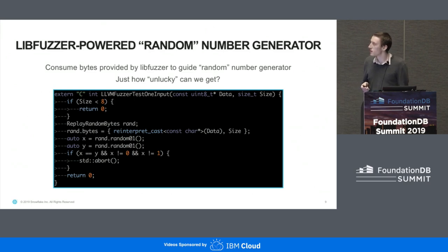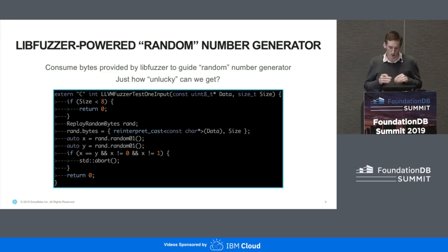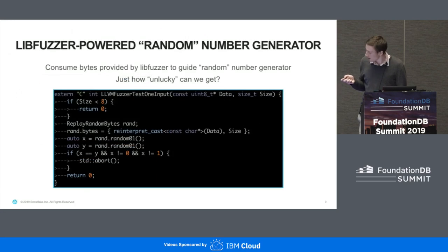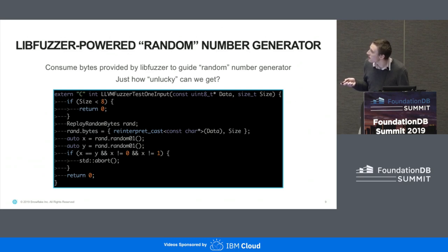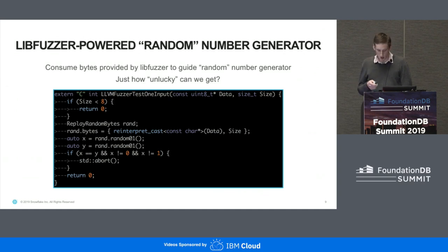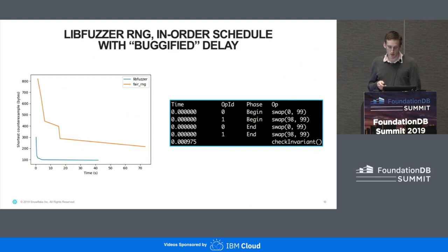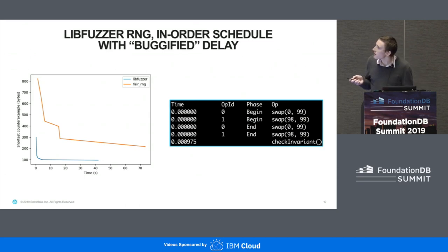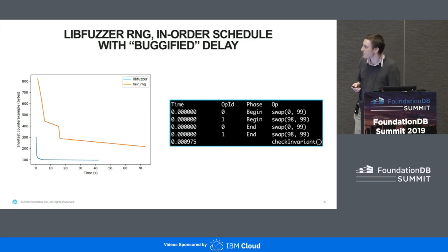The idea here is that instead of a fair random number generator, we just have the input to the program be the sequence of random numbers we're going to use. This ReplayRandomBytes class implements the random interface, and basically you can request two random numbers and crash if they're the same — and with libfuzzer it will actually find that input, whereas the random number generator won't. Comparing the quality: the fair random number generator finds a counter example and then slowly makes it slightly better but never really gets to the minimal one, whereas libfuzzer finds the minimal one very quickly.